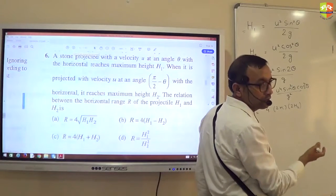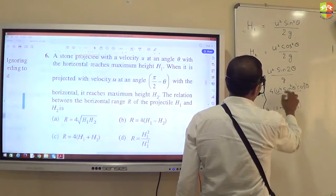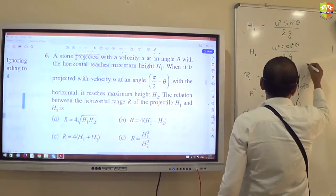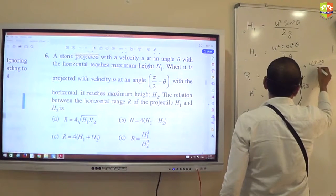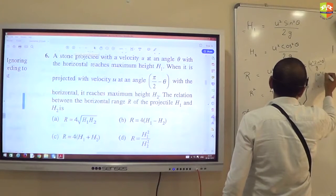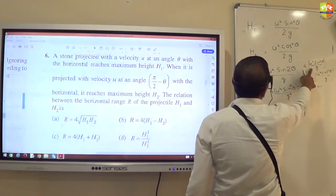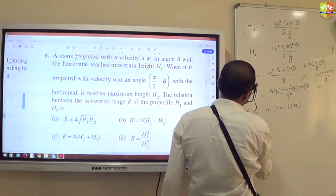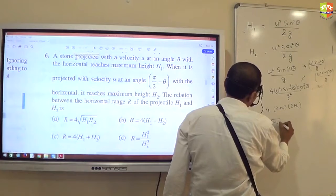u²sin²θ/2g is h1, u²cos²θ/2g is h2. So I can say that R² is 4 times - you can write this as u²sin²θ/g multiplied by u²cos²θ/g. u²sin²θ/g is 2h1, u²cos²θ/g is 2h2, so R is 4 times root of h1h2.